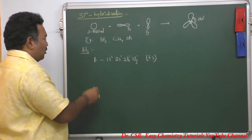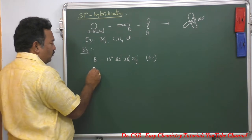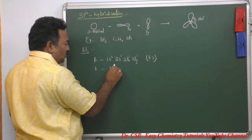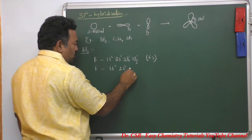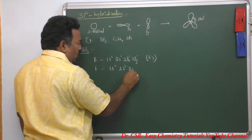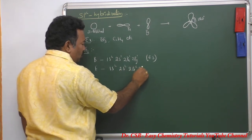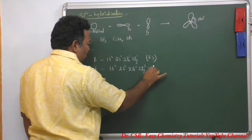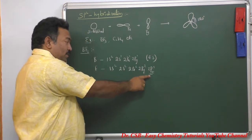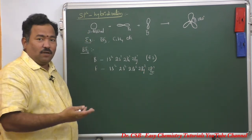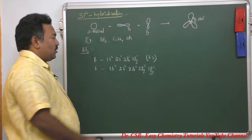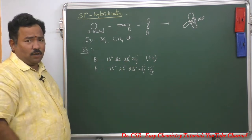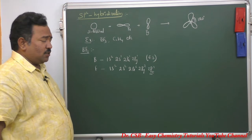Let me write the electronic configuration of fluorine also. In fluorine there is 1s2, 2s2, 2px2, 2py2, and 2pz1. So this pz orbital is ready to make bonds with the three hybrid orbitals.